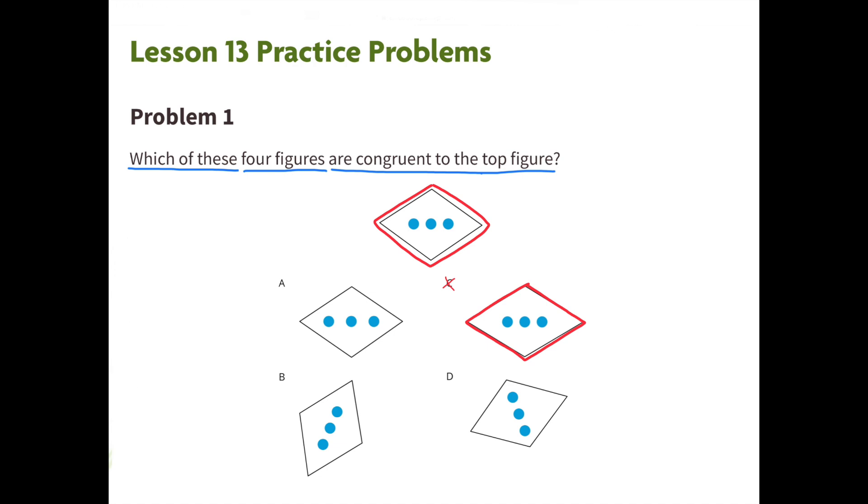might be slightly larger on Figure C than they are on the original figure. And Figure D is not congruent with the original figure either, because the dots on Figure D are vertical compared to the dots on the original, which are horizontal.